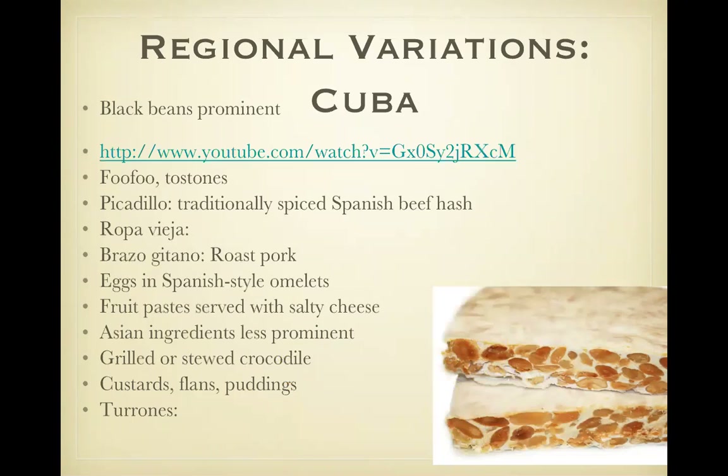Ropa vieja is spicy beef strips cooked until they shred, and brazo gitano is roast pork filled with cassava dough. Tostones are pressed plantain slices pictured there. Torones is a dessert — a nugget-like candy usually made with peanuts. This link also has a recipe for Cuban black beans.